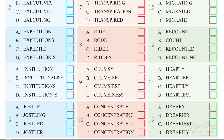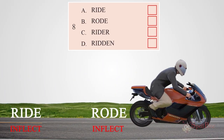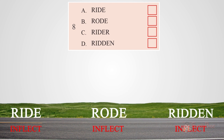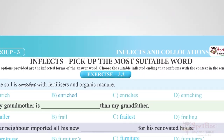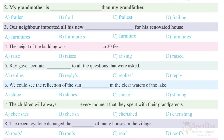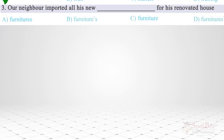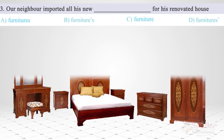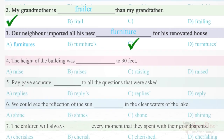The exercises offer two formats. The first is 'find the odd one out': ride, rode, ridden are all inflections, but 'rider' is not — it's a derivation. You also choose the correct answer: 'frailest' is not right; 'frailer' is correct, as in 'frailer than my grandfather.' The plural form of 'furniture' is still 'furniture,' and similarly 'luggage' stays 'luggage.'